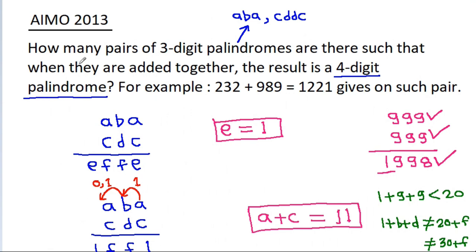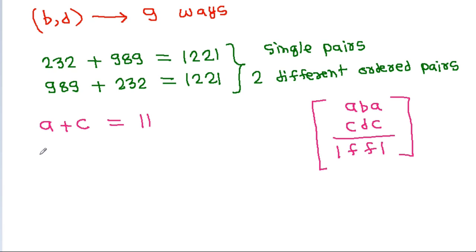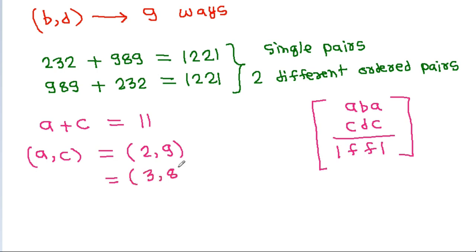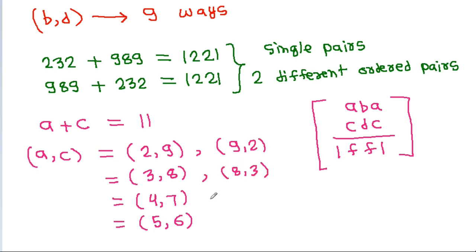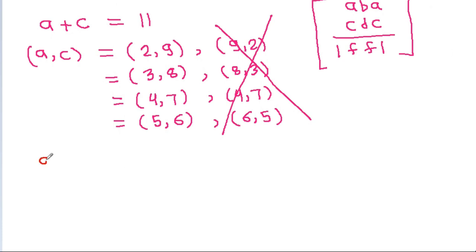We have to find total pairs. So A and C can be: (2,9), (3,8), (4,7), (5,6). A and C cannot be (9,2), (8,3), (7,4), (6,5) because they would give the same pairs. So A and C can be written in 4 ways.